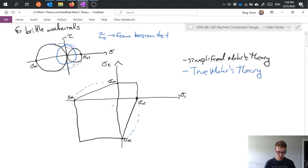what we might do is we can dash in a line this way and this way and the slope of this line is sigma 1 over sigma 2 is equal to minus 1 so it's got a 45 degree angle passing down there and then we go ahead and find where that line crosses our true Mohr's theory